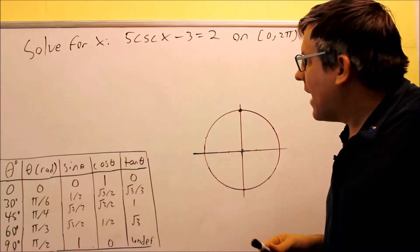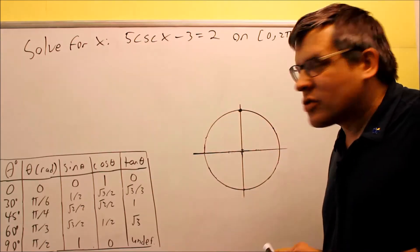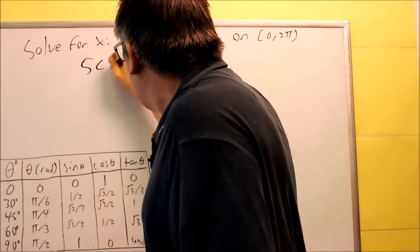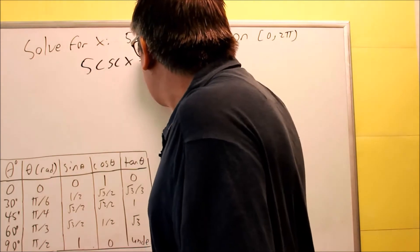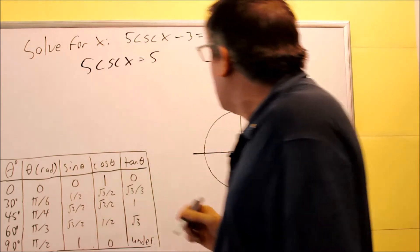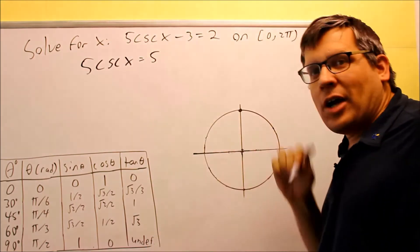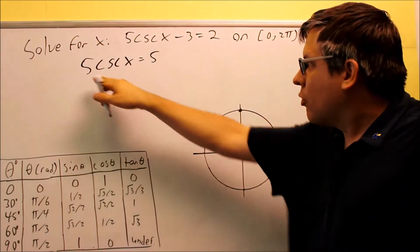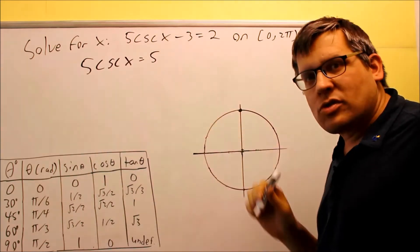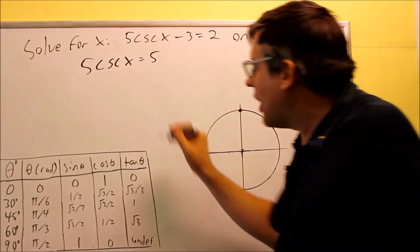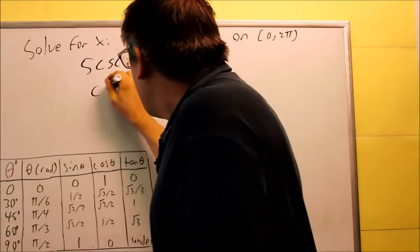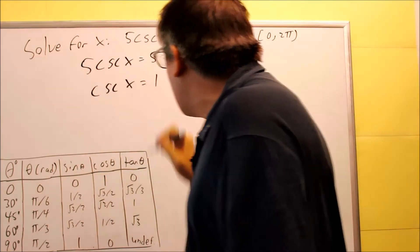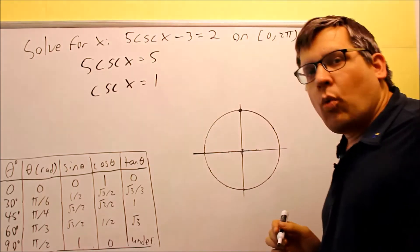We're going to do that by adding 3 to both sides of the equation. We get 5 cosecant x is going to equal 5 by adding the 3 to both sides. Now we want to divide both sides by 5, and we get cosecant x is going to equal 1.